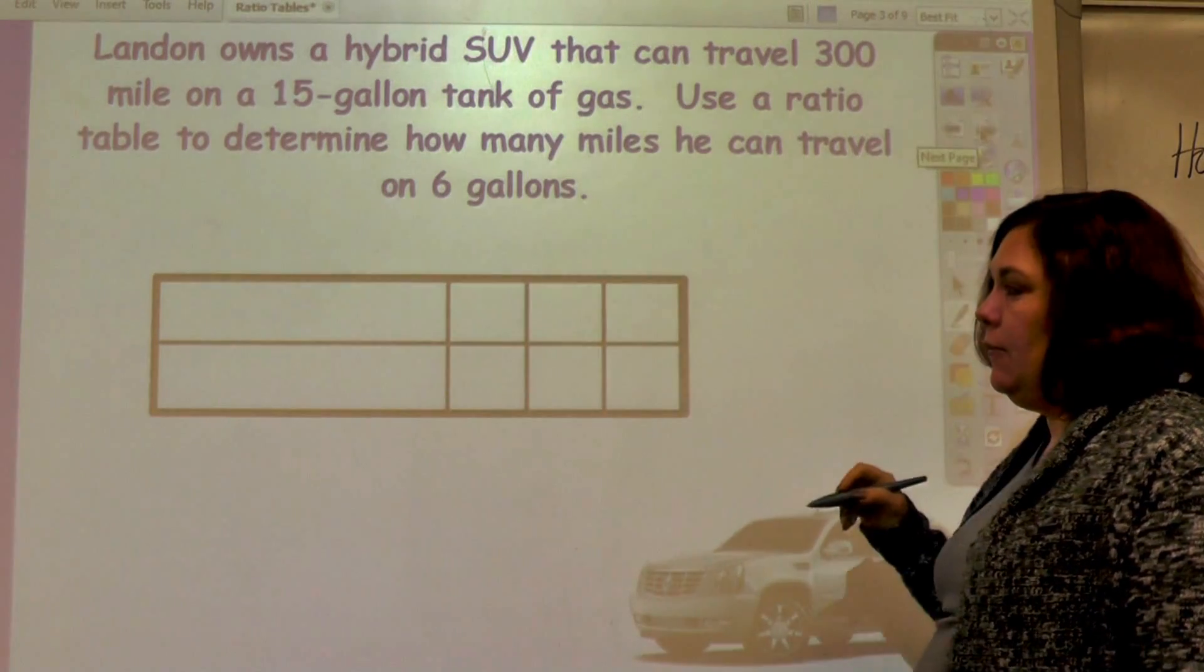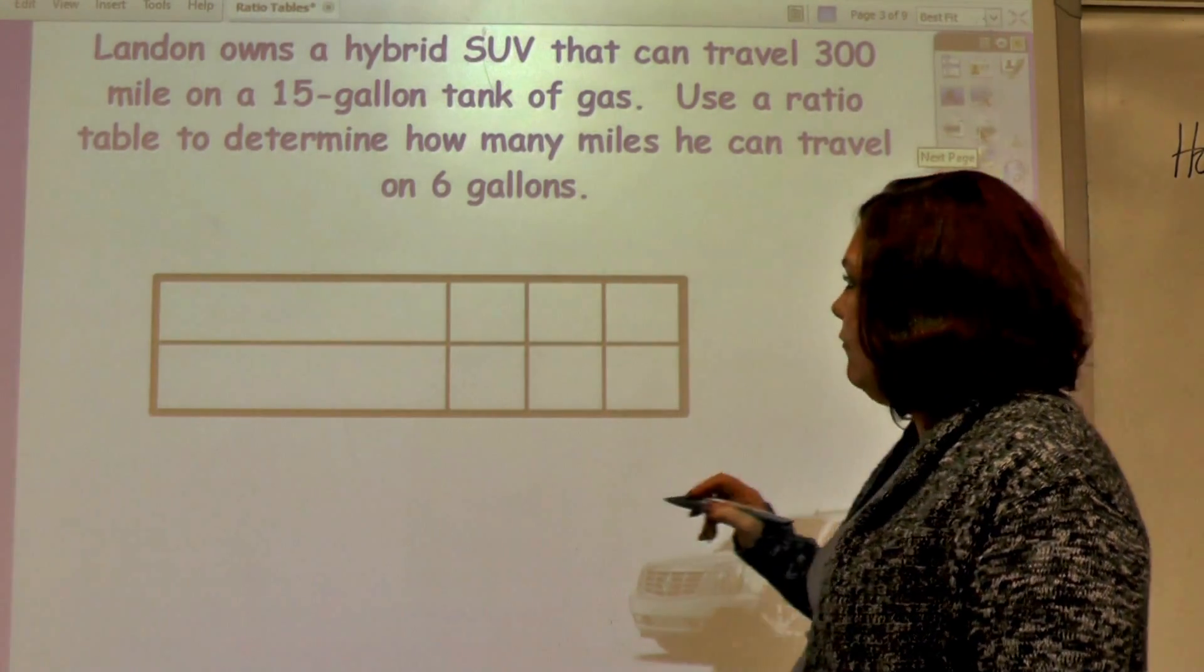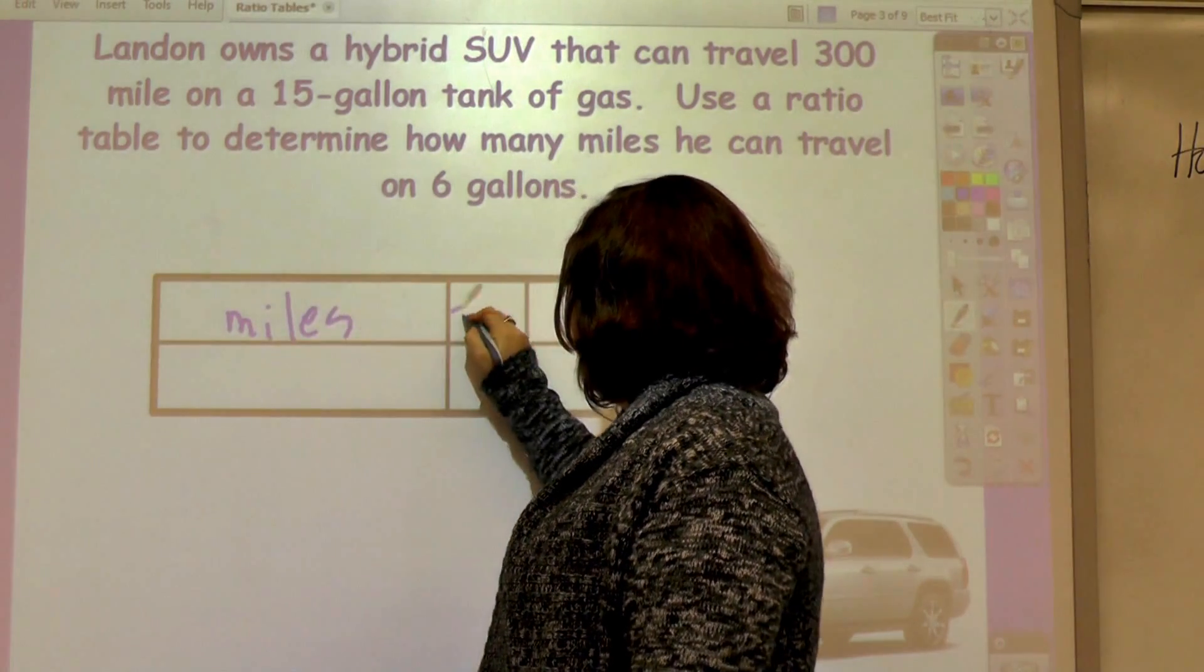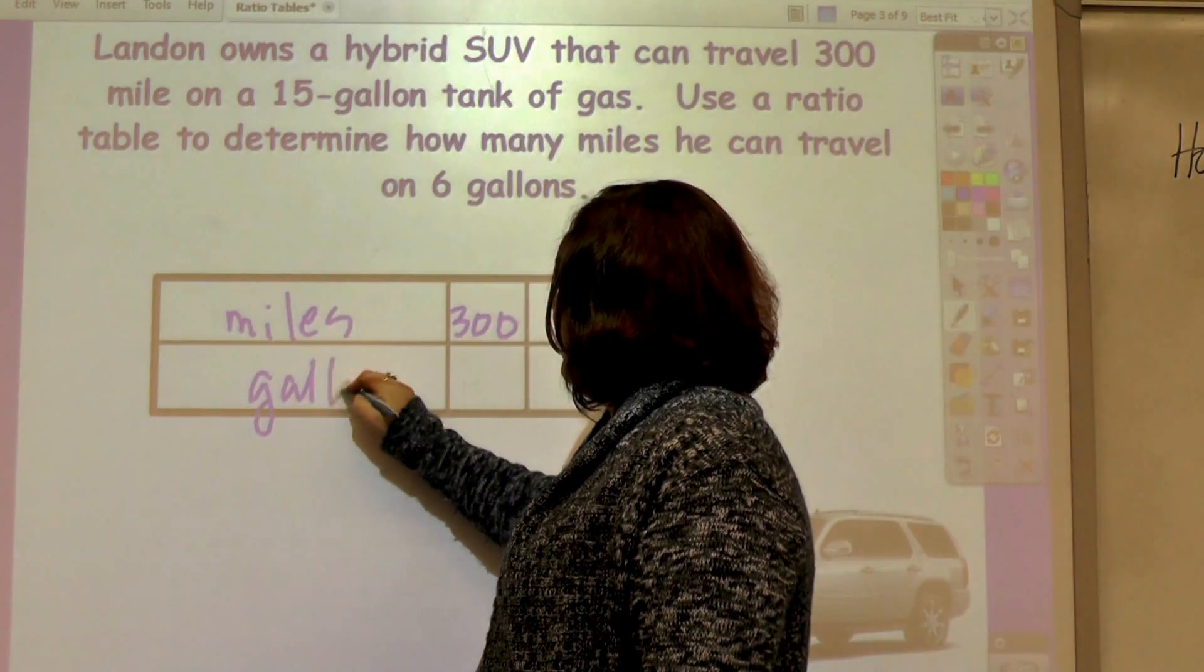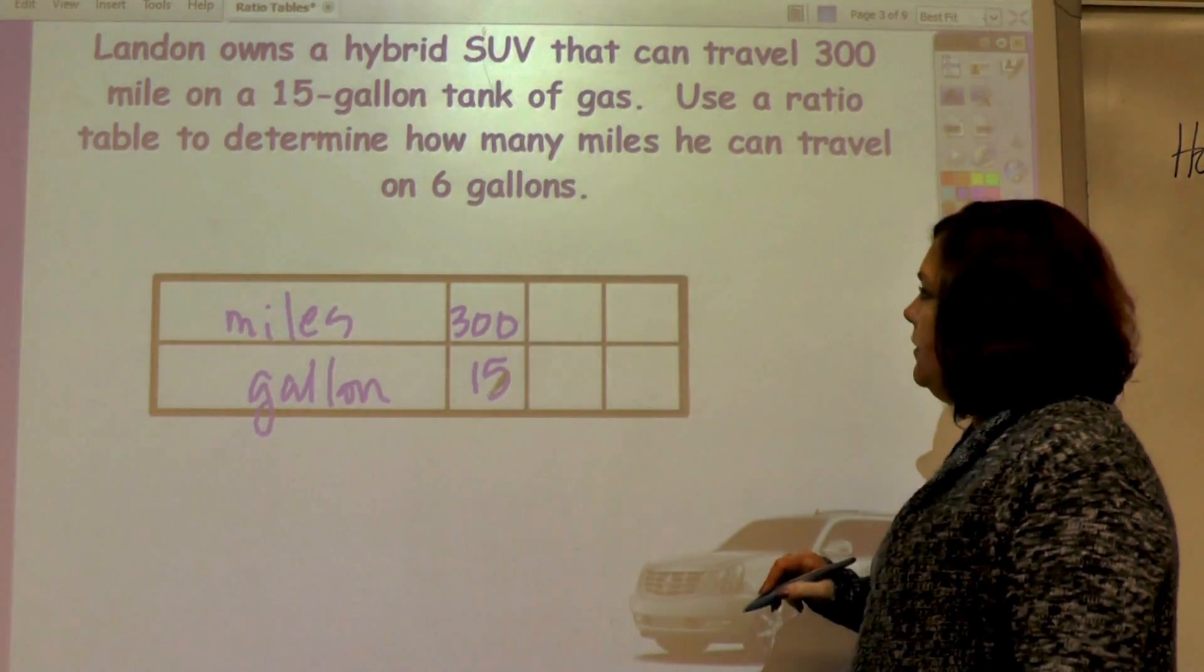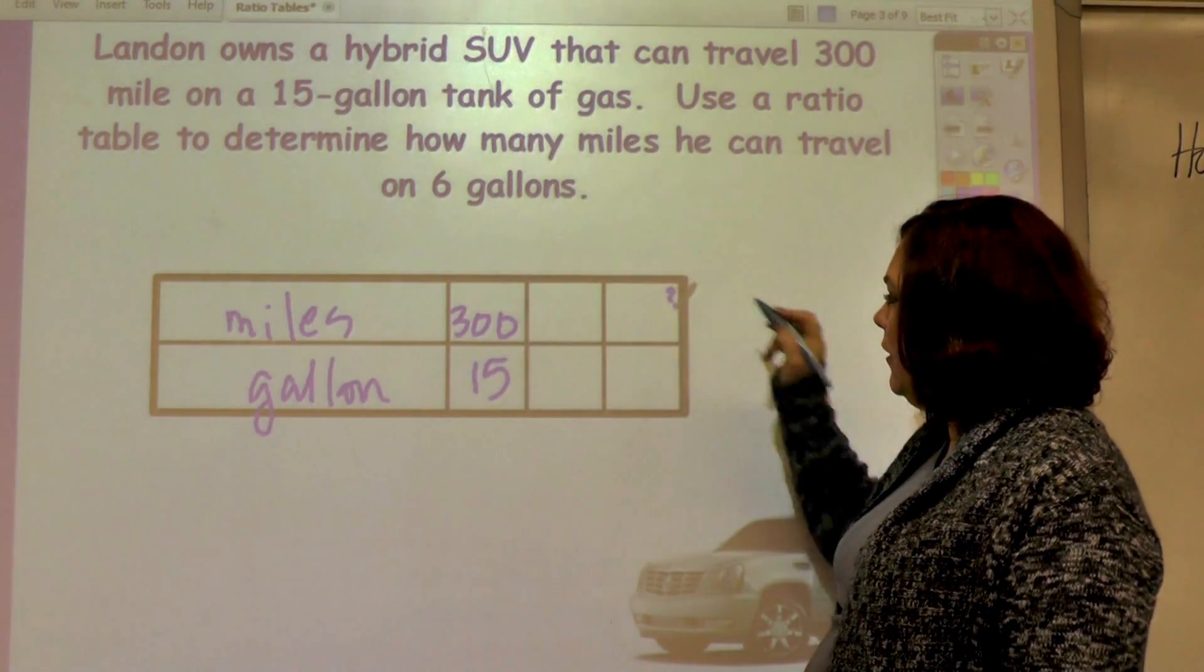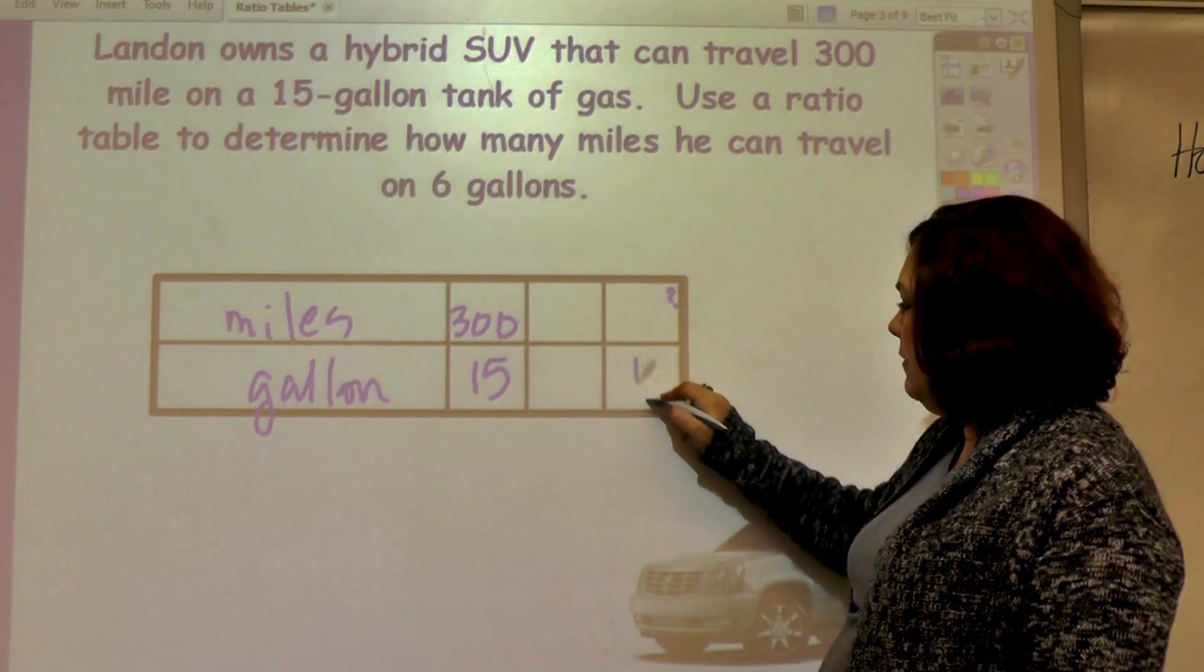Landon owns a hybrid SUV that can travel 300 miles, so I'm comparing miles, 300, to gallons, a 15 gallon tank, 15. Use a ratio table to determine how many miles, so this is my question mark, he can travel on 6 gallons, so this is 6.